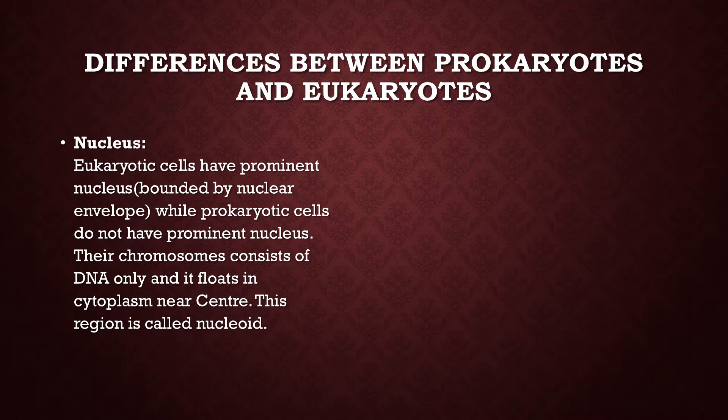Eukaryotic cells have a prominent nucleus bounded by a nuclear envelope. Bounded by nuclear envelope means that, just as a cell has a cell wall or cell membrane, the nucleus also has a membrane which is called the nuclear envelope.